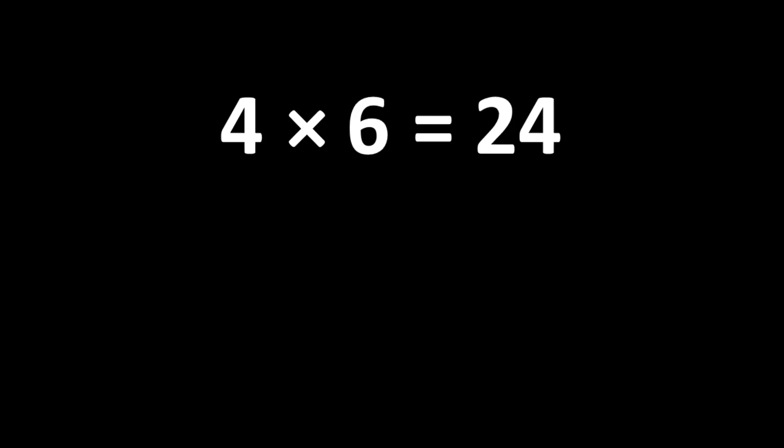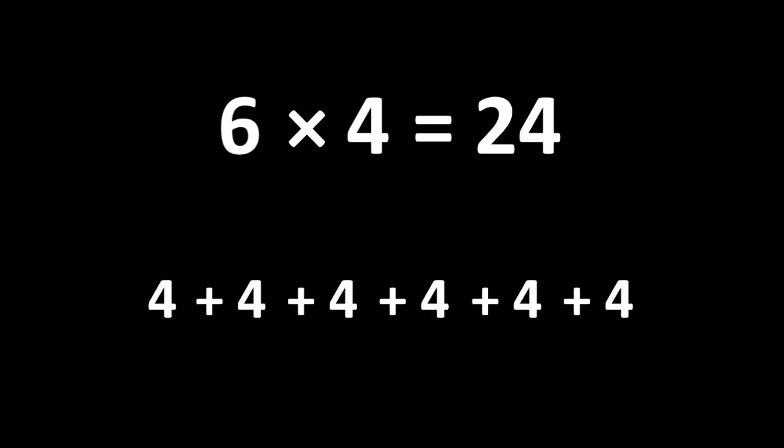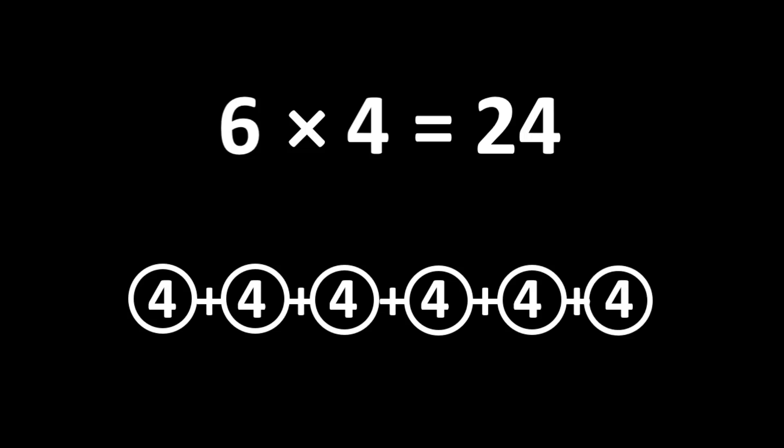And if 4 times 6 is equal to 24, we also know that 6 times 4 is equal to 24. So we can think of 24 as 6 groups of 4. If we count the groups of 4, we can see that there are 1, 2, 3, 4, 5, 6 groups of 4, which is equal to 24.